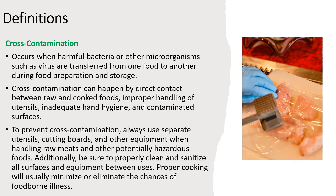Cross-contamination can happen by direct contact between raw and cooked foods, improper handling of utensils, inadequate hand hygiene, and contaminated surfaces. To prevent cross-contamination, always use separate utensils, cutting boards, and other equipment when handling raw meats and other potentially hazardous foods. Additionally, be sure to properly clean and sanitize all surfaces and equipment between uses. Proper cooking will usually minimize or eliminate the chances of foodborne illness.